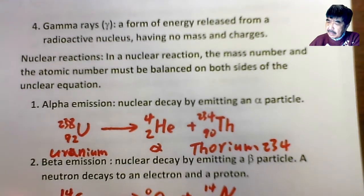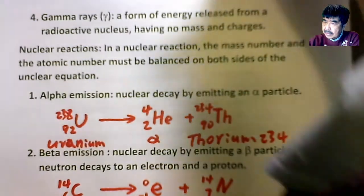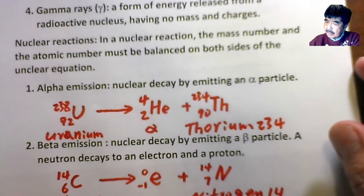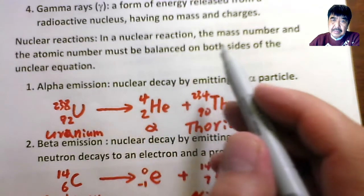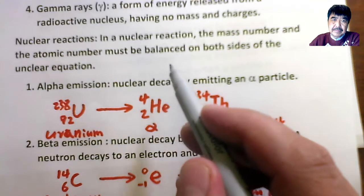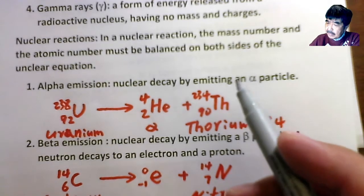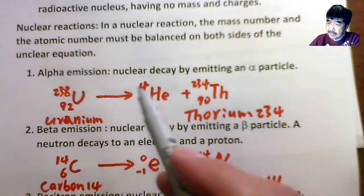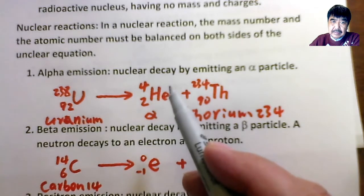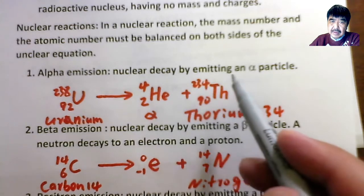Let's take a look at nuclear reactions. In a nuclear reaction, the mass number and atomic number must be balanced on both sides. The first type is called alpha emission. Alpha emission generates alpha particles — this is nuclear decay by emitting alpha particles.